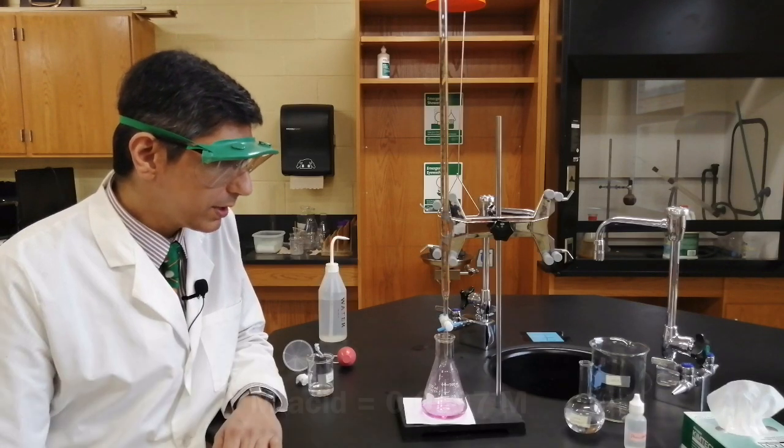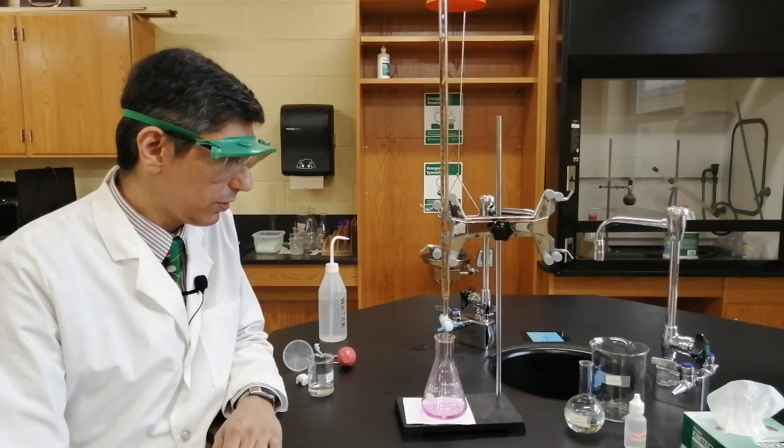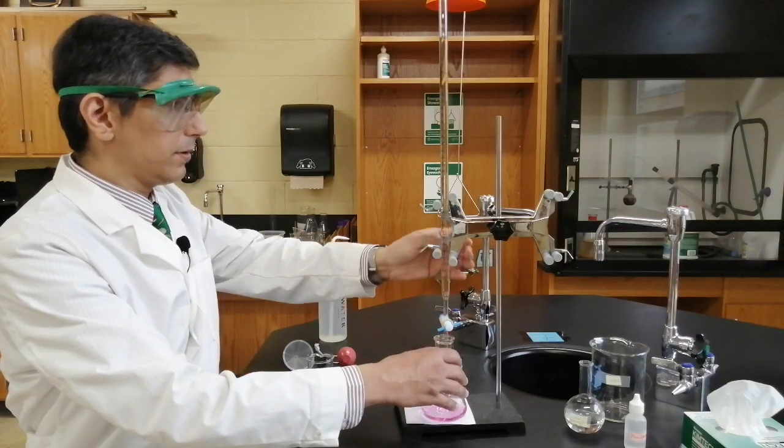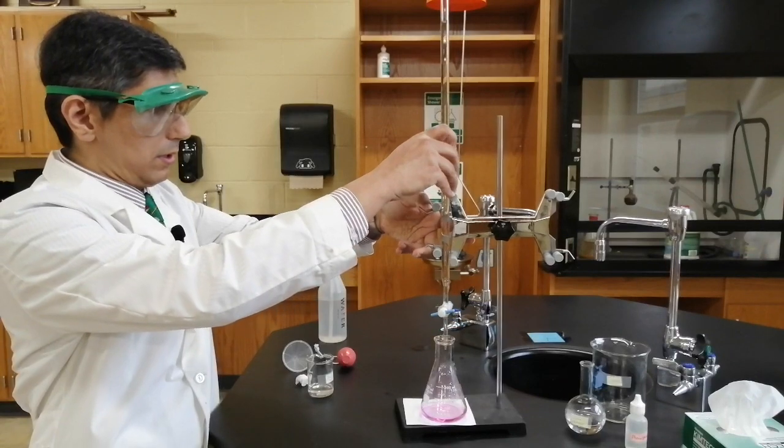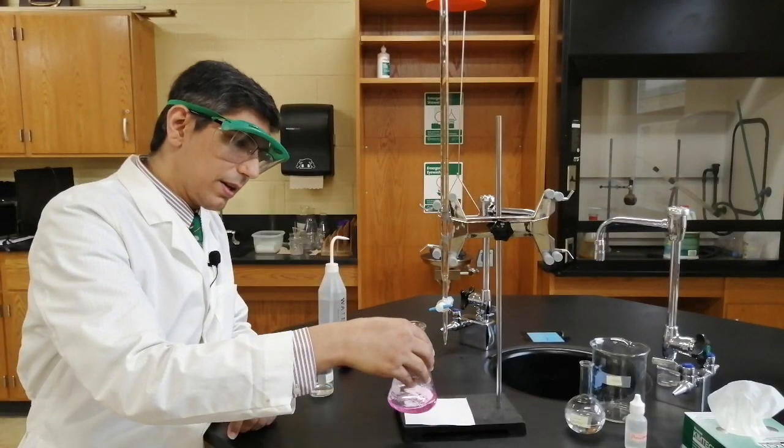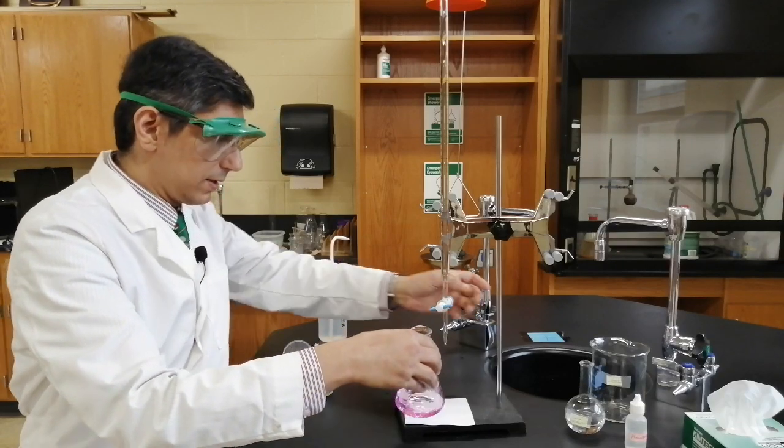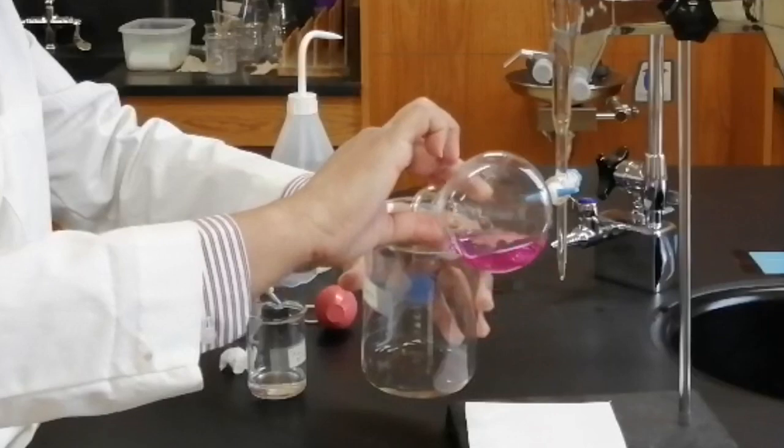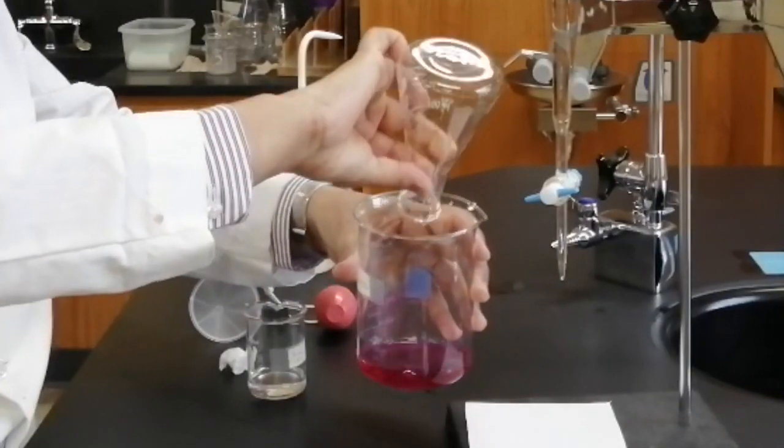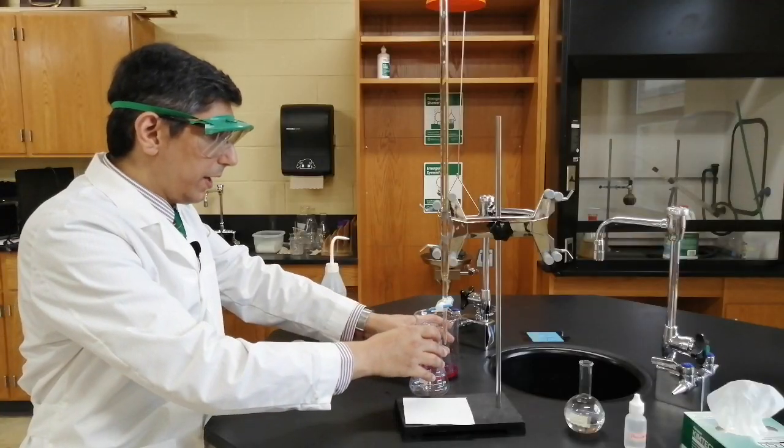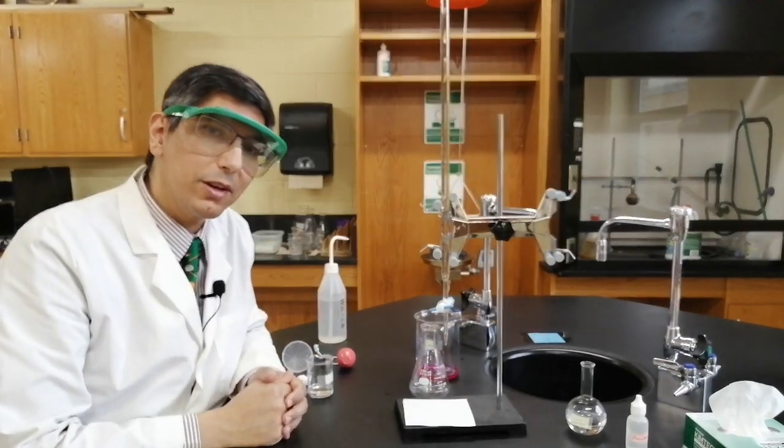So this is basically how we do an acid-base titration. And when you finish, you can clean up. You can lift this here, and we can take our finished product, which has a pH of somewhere around 9, and we can put that into our waste container. And now we can wash out our glassware and perhaps do a couple more titrations.